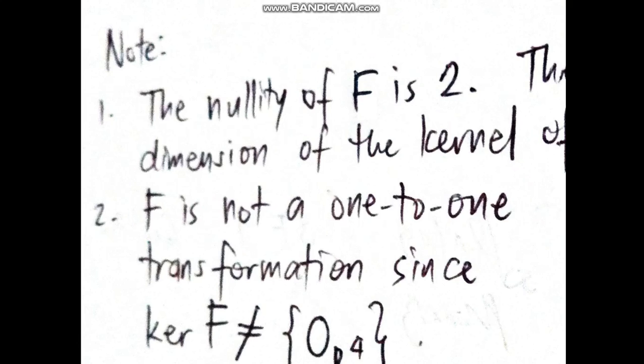Let's note that the nullity of F is 2, the dimension of the kernel of F. And next, F is not a one-to-one transformation since the kernel of F is not equal to the set containing only 0 in R to the fourth.